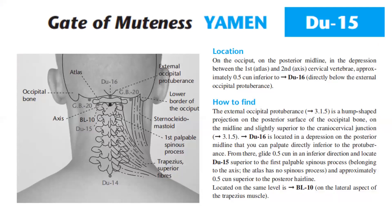Du 15 location: on the occiput on the posterior midline in the depression between the first cervical vertebra (the atlas) and the second cervical vertebra (the axis), approximately 0.5 cun inferior to Du 16, directly below the external occipital protuberance. The external occipital protuberance is a hump-shaped projection on the posterior surface of the occipital bone, on the midline, slightly superior to the cranioservical junction. Du 16 is located in the depression on the posterior midline directly inferior to the protuberance; from there, glide 0.5 cun inferiorly and locate Du 15 superior to the first palpable spinous process belonging to the axis. The atlas has no spinous process, and Du 15 is approximately 0.5 cun superior to the posterior hairline.